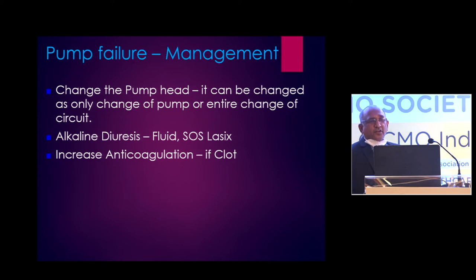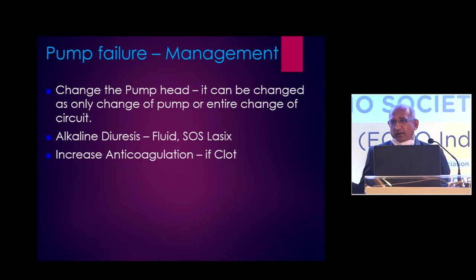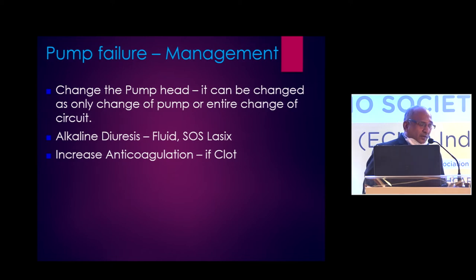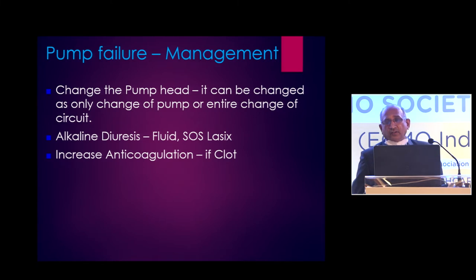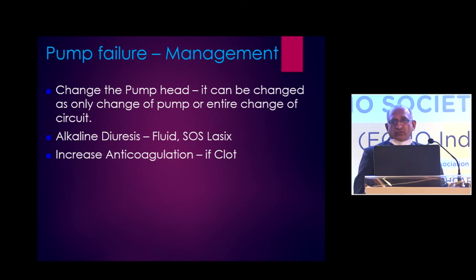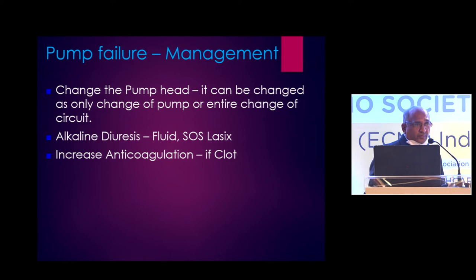The treatment is to change the pump or change the entire circuit. Both have plus and minus points. If you just change the pump, the cost comes down and you are not exposing the patient to a new circuit entirely, which would cause another surge reaction, additional blood transfusion, and drug level fluctuation. Because the patient has developed hemolysis, you have to manage that — use fluids, allow the patient to diurese, use alkaline diuresis if required, so that breakdown products are cleared. Find out why it occurred in the first place and probably increase the anticoagulation to prevent a second episode.